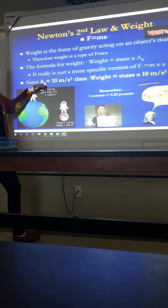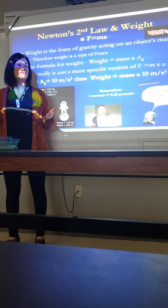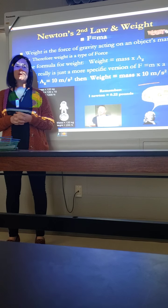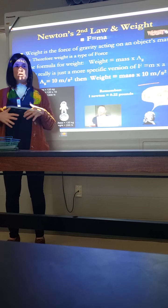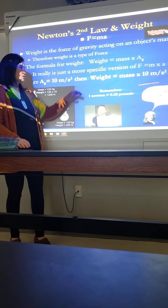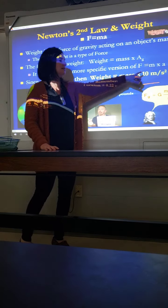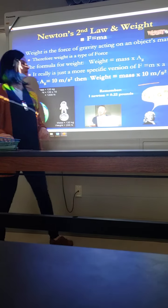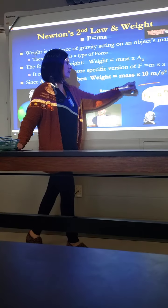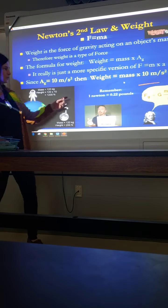We automatically know that the acceleration is going to be 10, so that's going to be given. Sometimes in the practice problems it might seem like there isn't enough information, but by default, if we're talking weight and we're here on Earth, then we know the acceleration. If the weight or the acceleration would be something different — like you're on another planet or the moon — then that acceleration would have to be given to you. If the acceleration is not given, you can just assume it's 10.